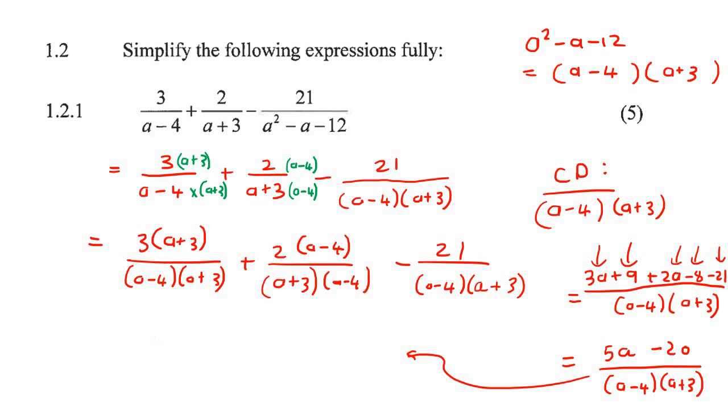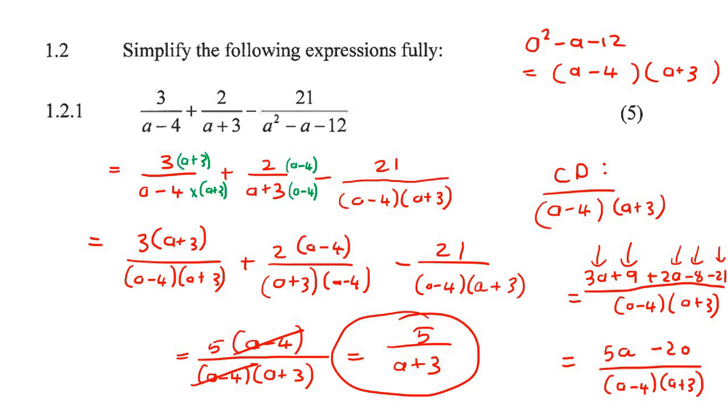So we'll take out a 5 as a common factor at the top, and you're left with a minus 4. And then at the bottom, you have a minus 4 and a plus 3. And then these can cancel. And so we are left with a final answer of 5 over a plus 3. That is the final answer for this question.